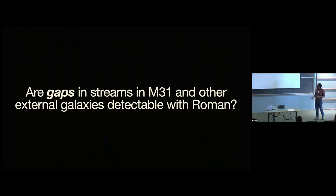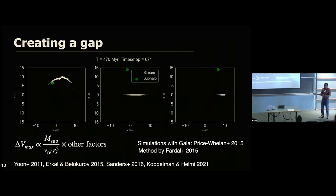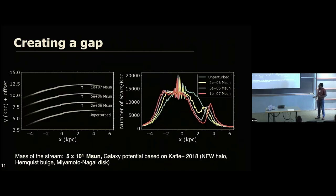So that's what we're trying to answer. So to do that, we just have to create a stream realistically, and then create a gap in the stream, and then resimulate that and see if we can actually observe it. So to do that, we use this tool called GALA. It's a code that Adrian Price-Whelan developed. And I'm just showing like a very extreme version of that, where you have like a 10 to the 8 solar mass subhalo that goes through a stream and kind of splits the stream apart. So the velocity impact that the subhalo puts in the stream depends on its mass and then scale radius of the subhalo and the relative velocity between the stream and the subhalo. But there's other factors. Our goal here was really just to create a gap and see if we can observe it.